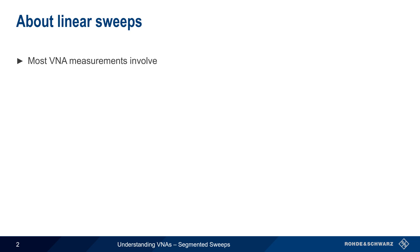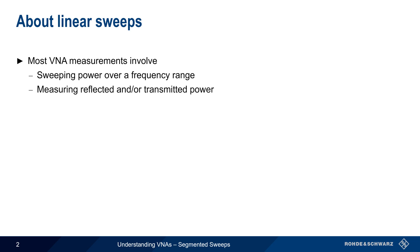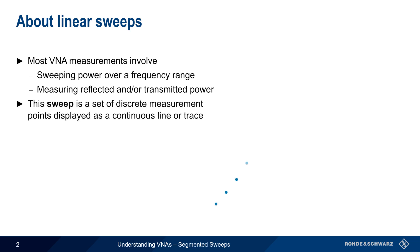Most measurements made with Vector Network Analyzers involve sweeping power over a user-defined frequency range and simultaneously measuring the amount of reflected power and/or power appearing at other ports on the device under test. This sweep is actually a set of measurements made at discrete points, which are then often displayed as a continuous line or trace.